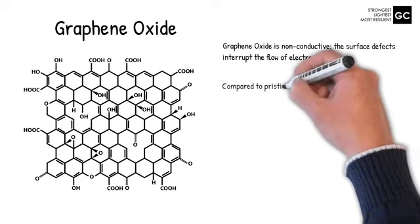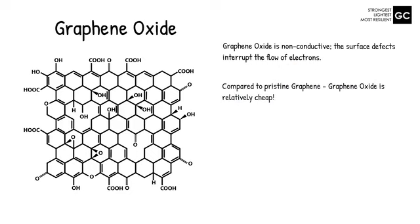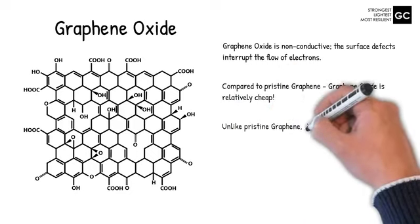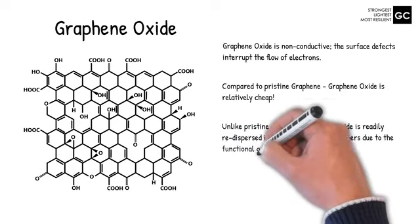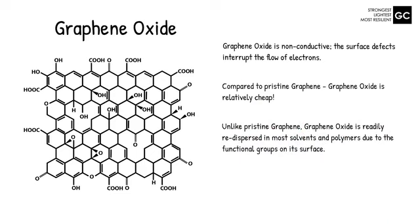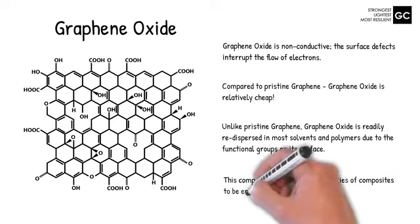Compared to pristine graphene, graphene oxide is relatively cheap. Unlike pristine graphene, graphene oxide is readily re-dispersed in most solvents and polymers due to the functional groups on its surface. This compatibility allows the properties of composites to be enhanced.